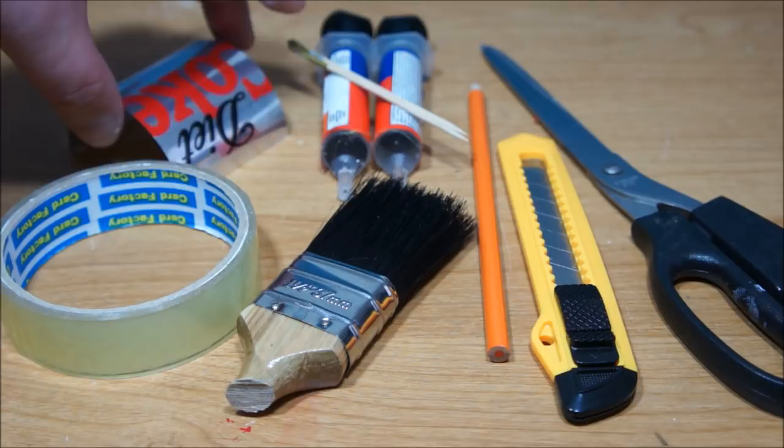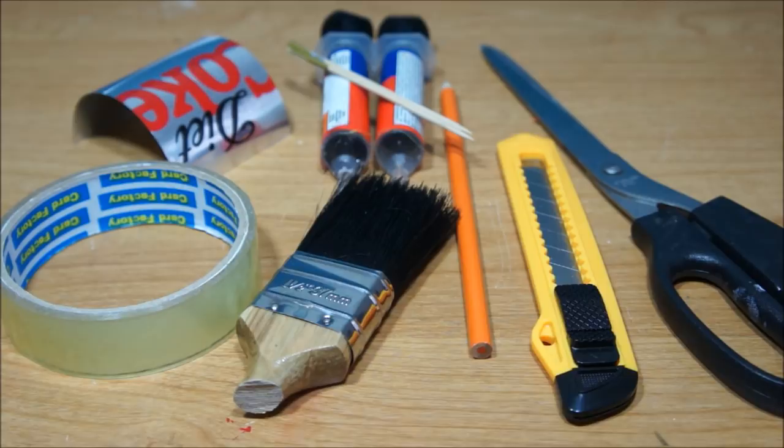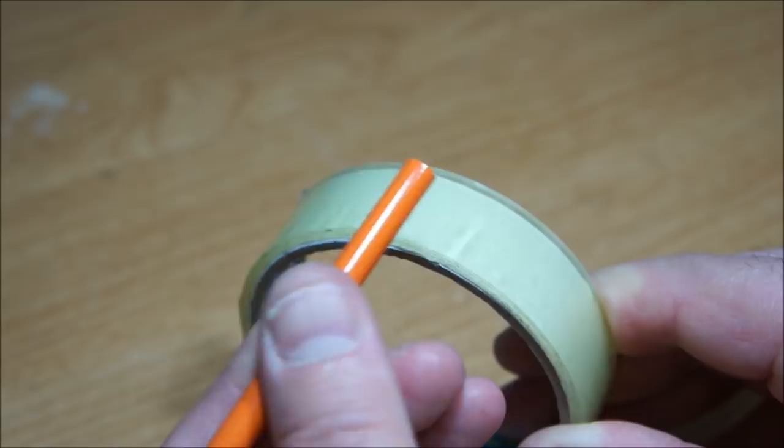So I have a roll of 1 inch or 25mm scotch tape, side off an aluminum drinks can, 5 minute epoxy there and some mixing sticks. Down here obviously is my paintbrush head. I've got a pencil there which is going to form the new handle, craft knife and a standard pair of scissors.